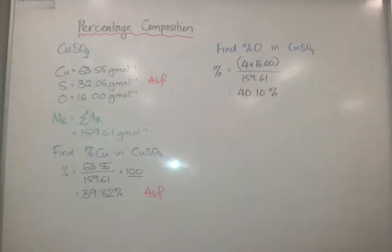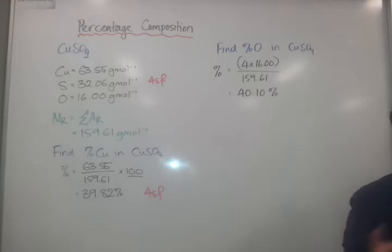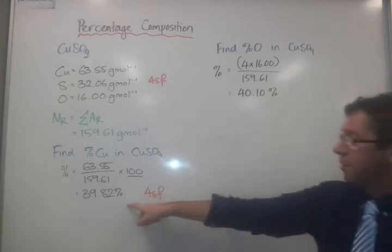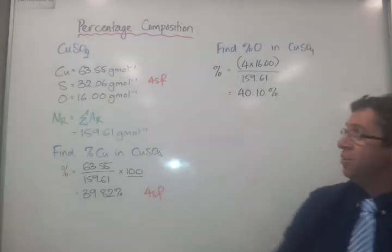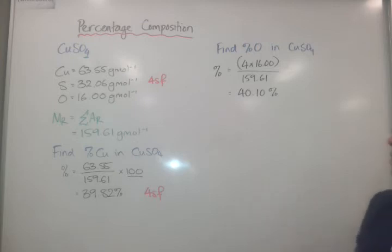And there you go. So notice that if there's more than one in there, you need to allow for that. You're not saying what percentage is just one oxygen in there. You're saying what is the total oxygen percentage in there. All right, now by simple math, that plus that subtracted from that, you can actually work out the rest of it. Or you could go 32.06 over that again times 100.